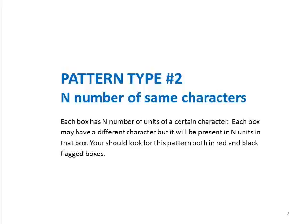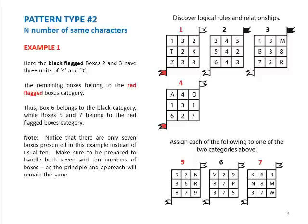Now let's see a couple of examples. Example number 1. Here we see 4 boxes in the upper section of this question set. Notice that two of them have red flags as boxes number 1 and 4, while the other have black flagged boxes, boxes 2 and 3. Both black flagged boxes contain 3 units of one character. For example, in box 2 it's number 4 and in box 3 it's number 3.